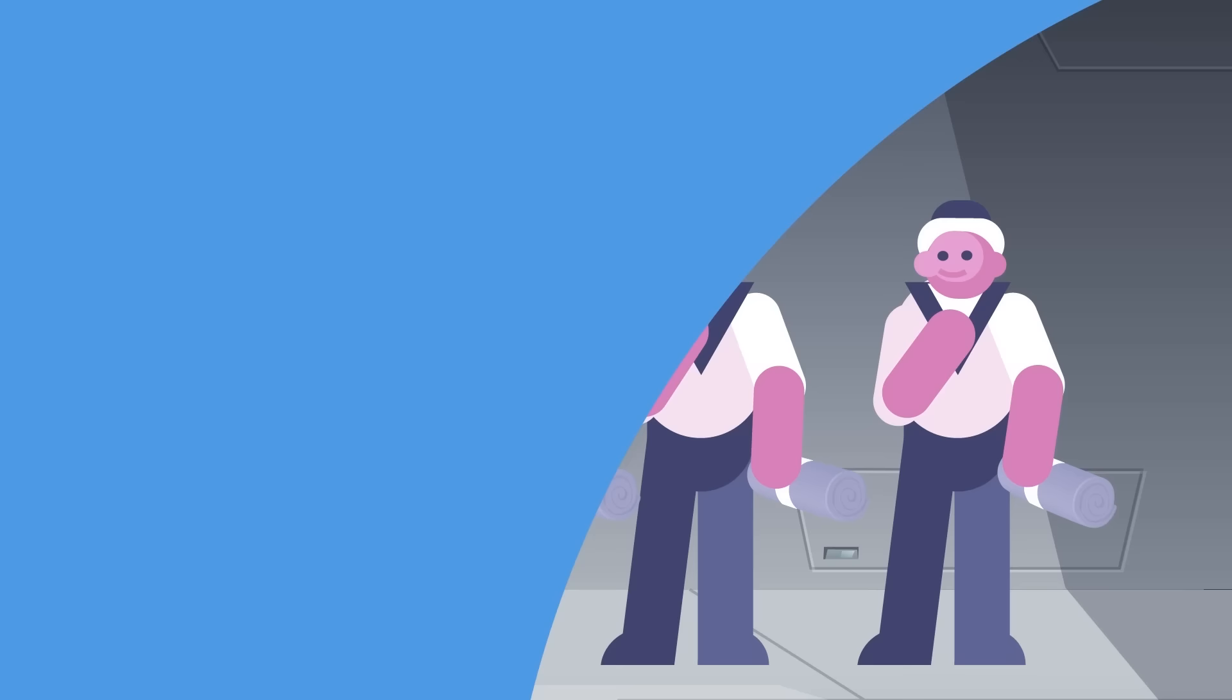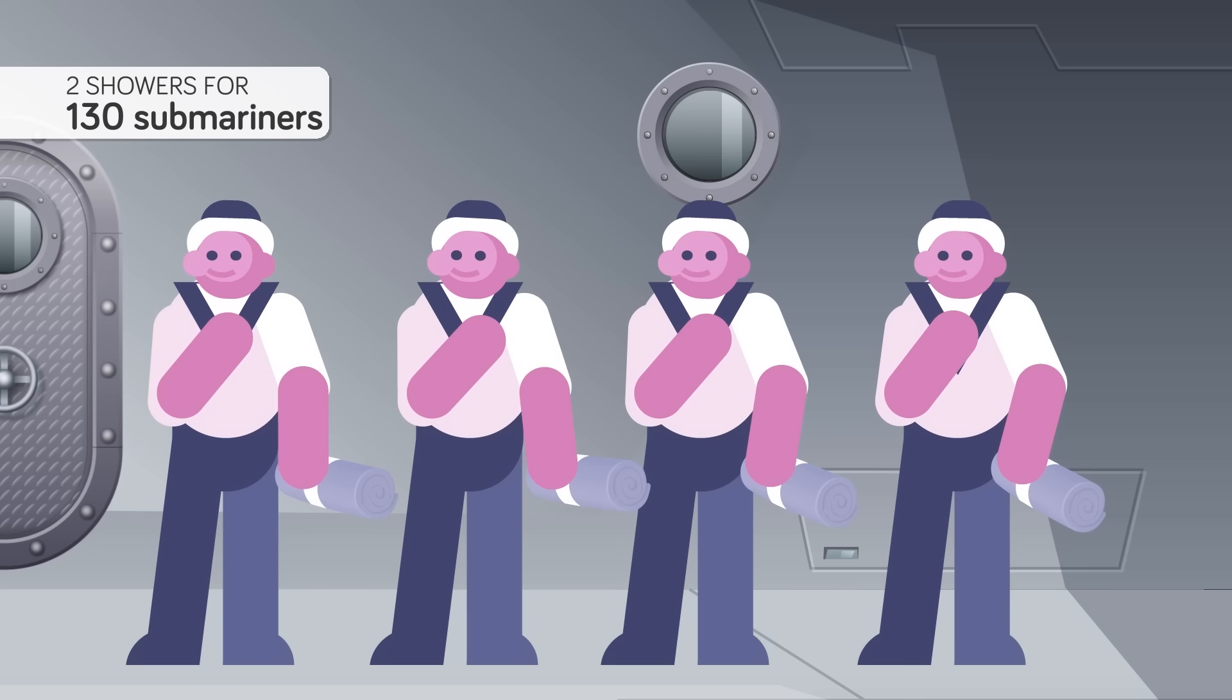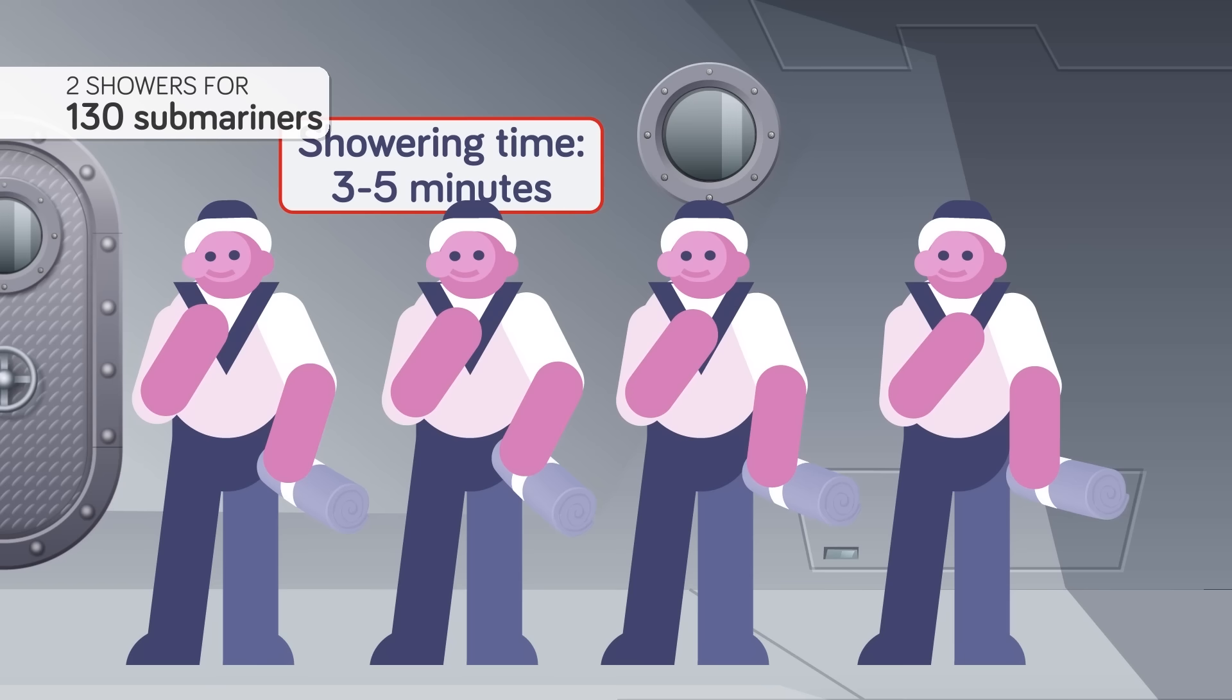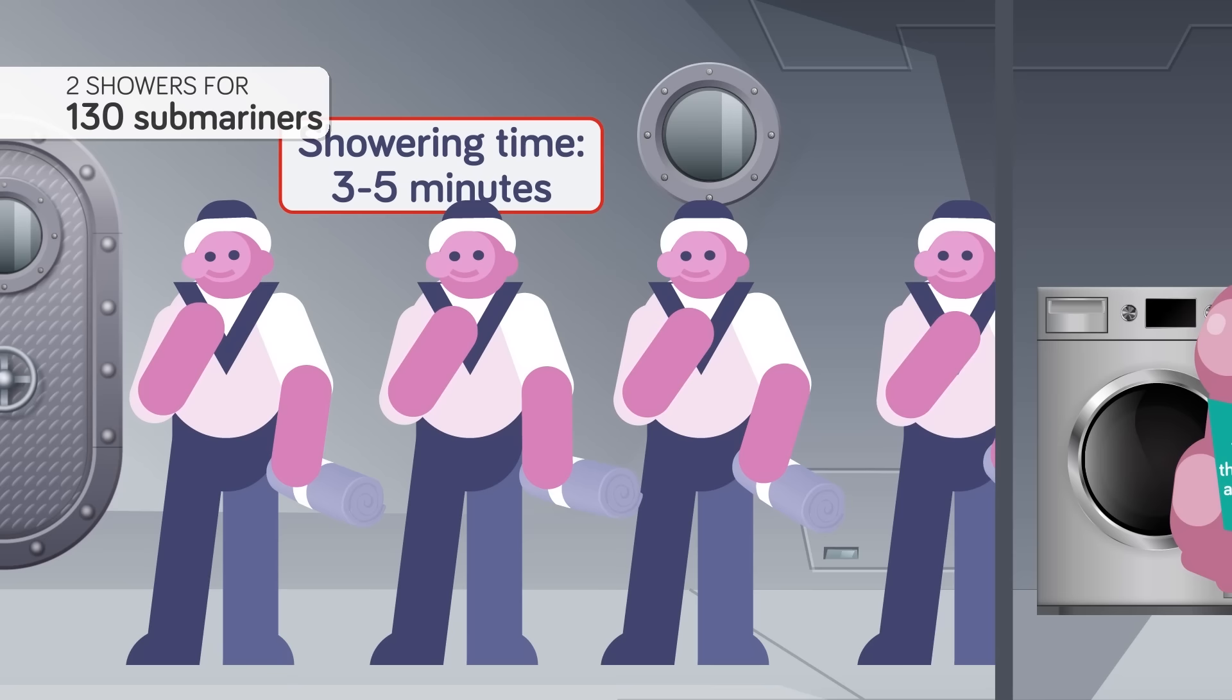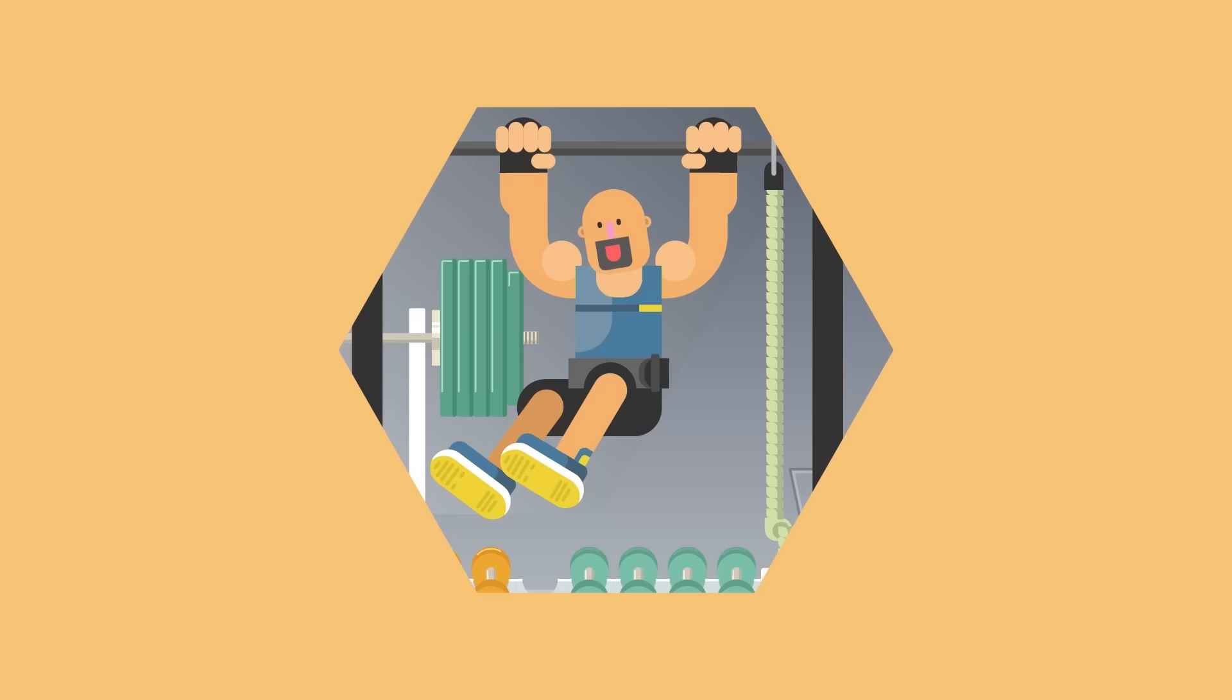Bunks aren't the only place with limited space. There's typically only two showers for the entire crew of up to 130 submariners, and a maximum showering time of 3-5 minutes is enforced. This not only helps ensure everyone who needs one can get a shower, but it also lessens the strain on the ship's water filtration system, which turns salty seawater into fresh water. There's also typically only a single dryer and washer aboard a submarine, making clean laundry a luxury. For entertainment, there is a tiny gym with typically one to two machines, and free weights which the crew can use.